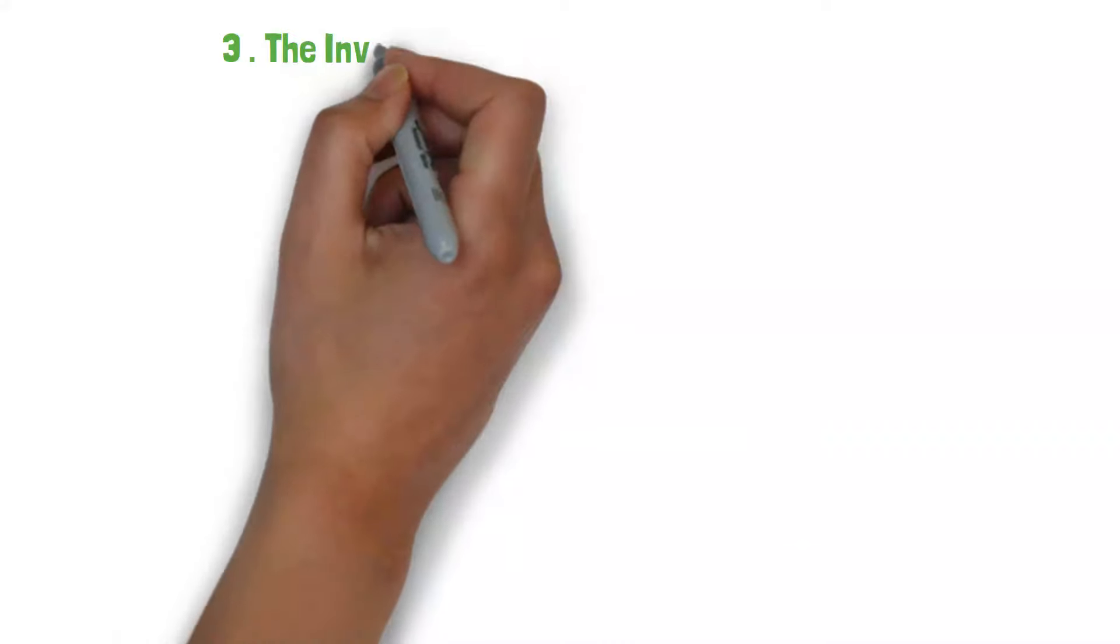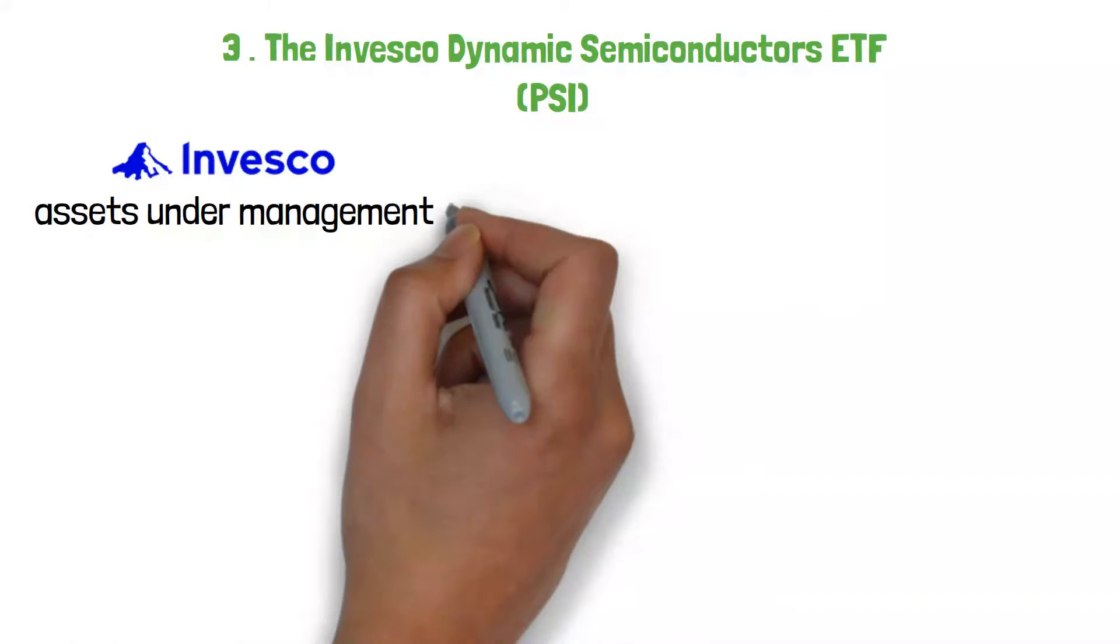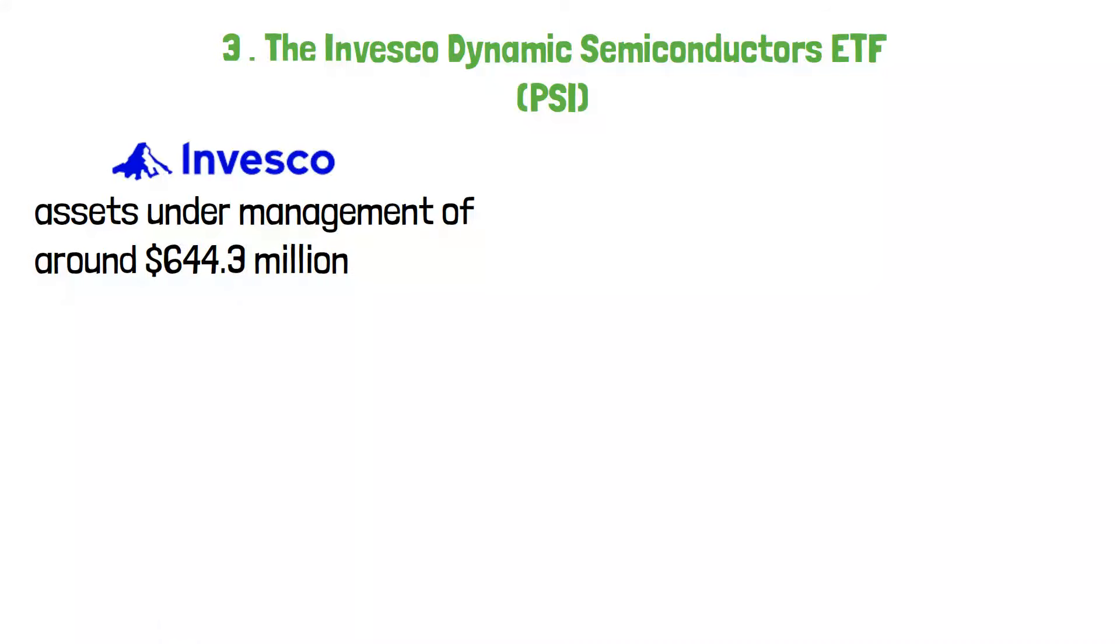Number three, the Invesco Dynamic Semiconductors ETF (PSI). The Invesco Dynamic Semiconductors ETF, managed by Invesco, presently has assets under management of around $644.3 million.